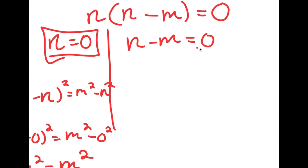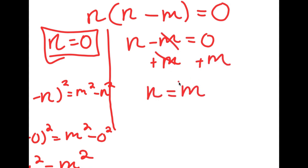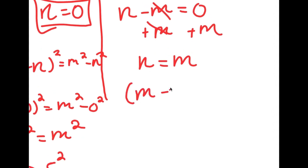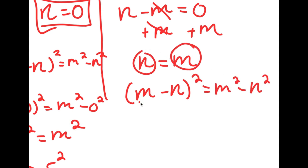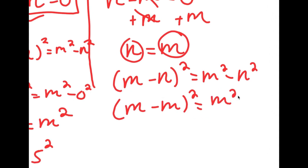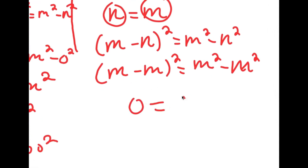For n minus m equals 0, if I add m on both sides, I get n is equal to m. If I put this back into the original equation, I have m minus n squared is equal to m squared minus n squared, and I'm going to rewrite n as m. So now I have m minus m squared is equal to m squared minus m squared. m minus m is 0, so I have 0 is equal to 0, meaning they're both equal to 0.